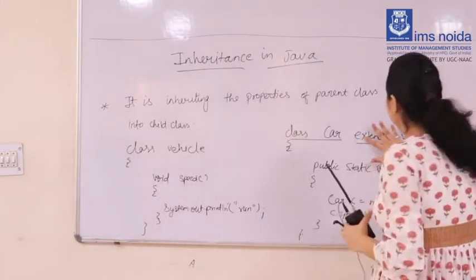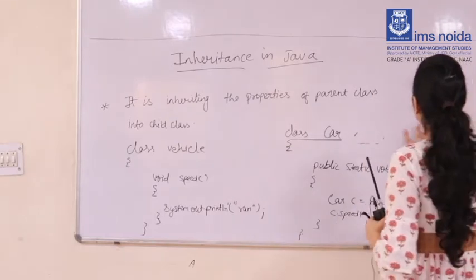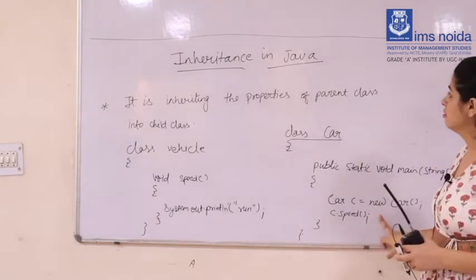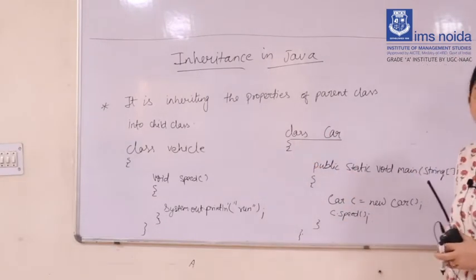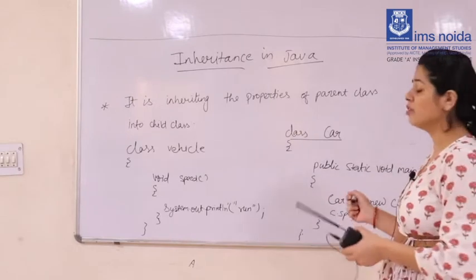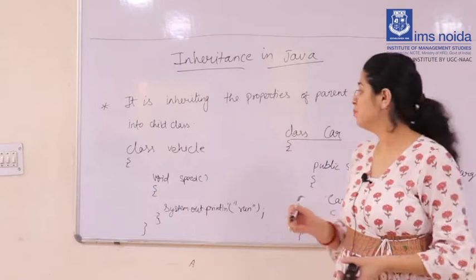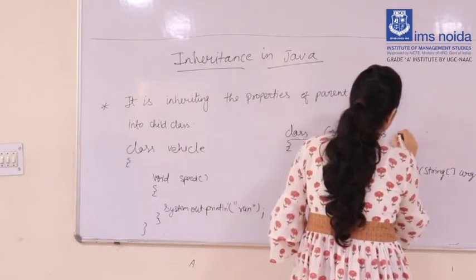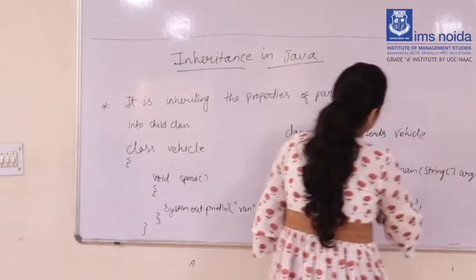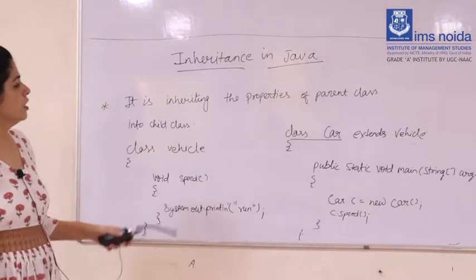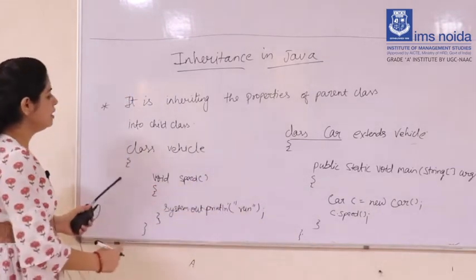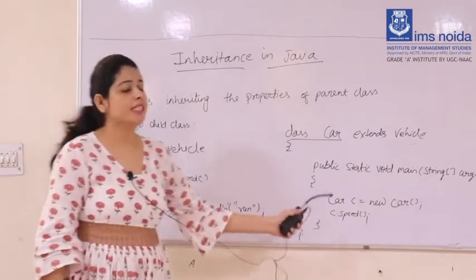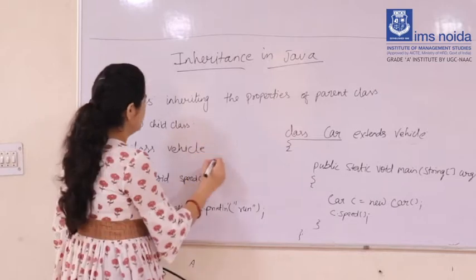Now, if I remove the 'extends' keyword, can I access the speed method from the parent class in the child class? No, I cannot access it — the compiler will give an error. So the 'extends' keyword is what establishes the inheritance relationship.